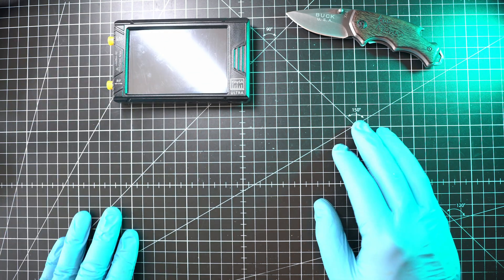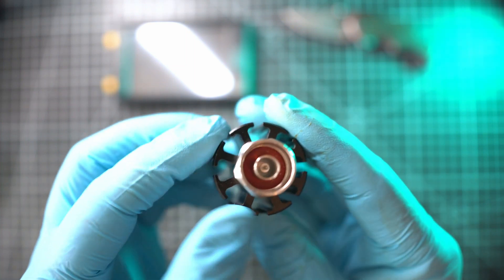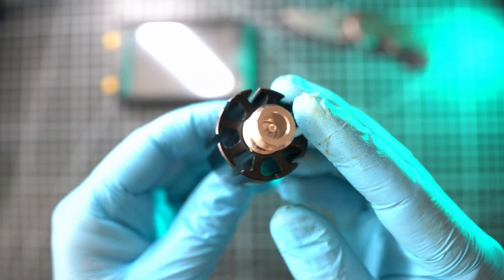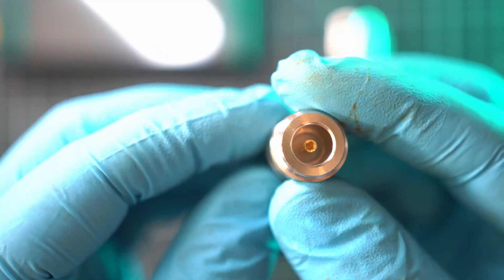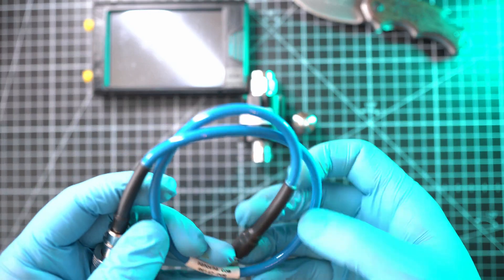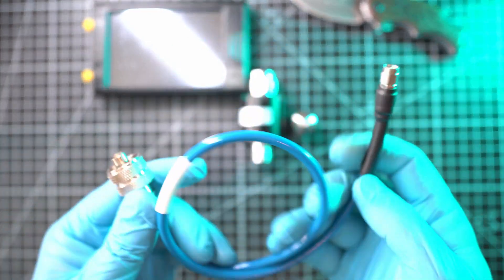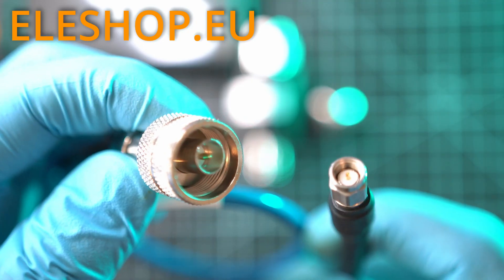This TinySA Ultra is amazing pocket-sized spectrum analyzer. But for this job, is attenuator necessary? This is 40 dB attenuator with type N connectors. So this type N to SMA adapter is also handy. Along with this quality cable with type N and SMA connectors. All this came from ELESHOP.EU as well.